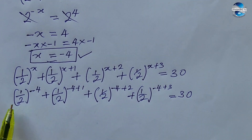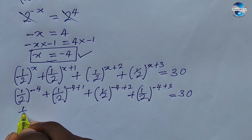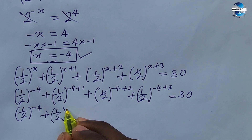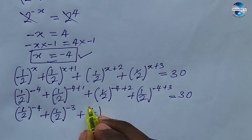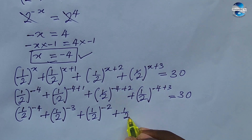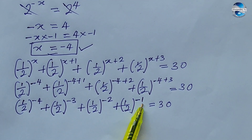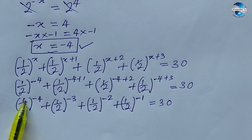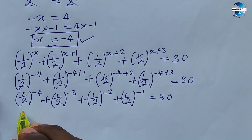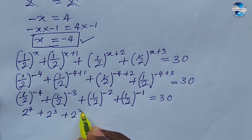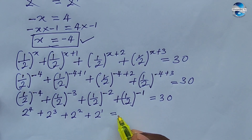Simplifying by eliminating the negative exponents — we flip each term: (1/2)^(−4) = 2^4, (1/2)^(−3) = 2^3, (1/2)^(−2) = 2^2, (1/2)^(−1) = 2^1. So we have 2^4 + 2^3 + 2^2 + 2^1 = 30.